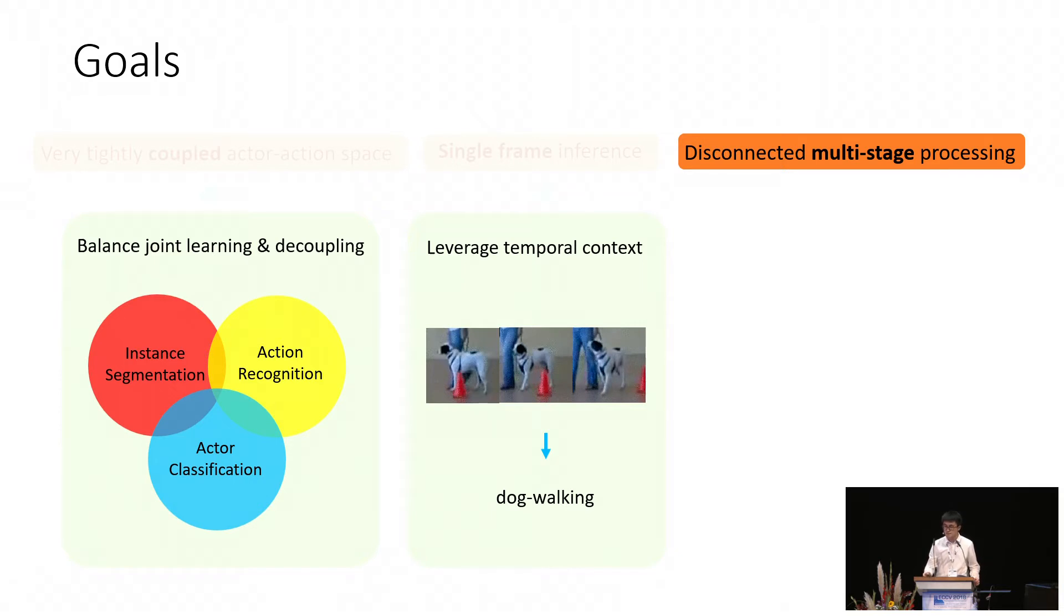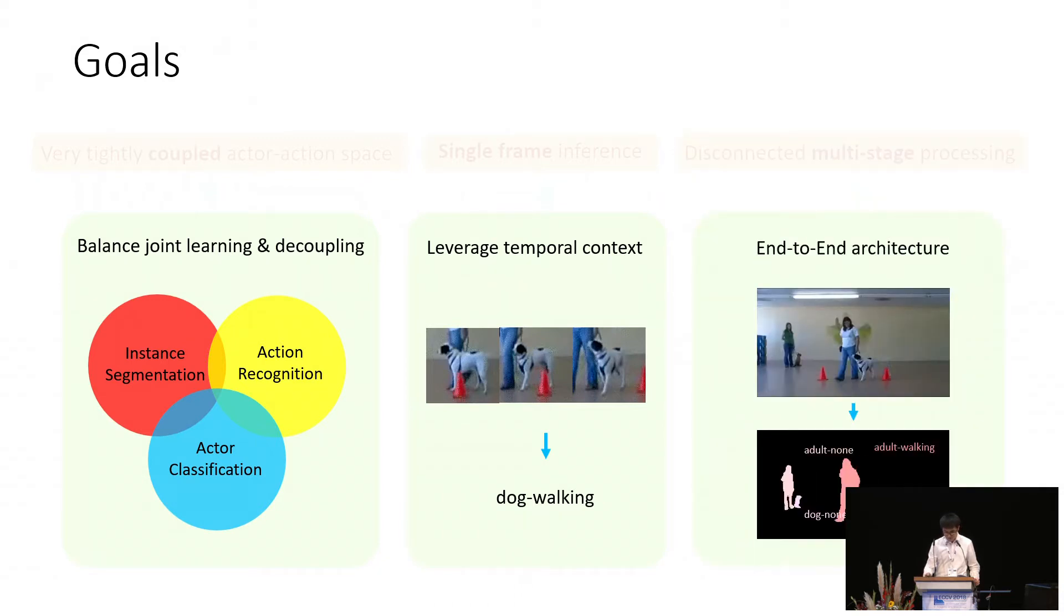Third, instead of a disconnected multi-stage processing, we would like to have an end-to-end model that jointly solves all subtasks. This is important because it can enable more optimal model and feature learning.